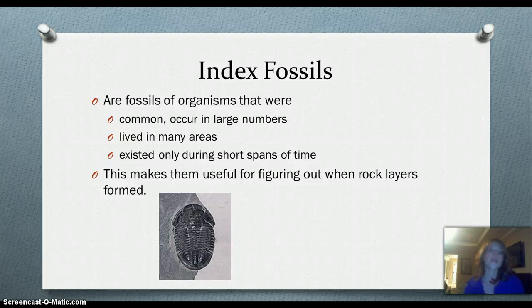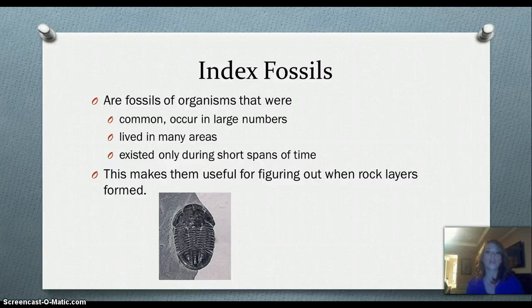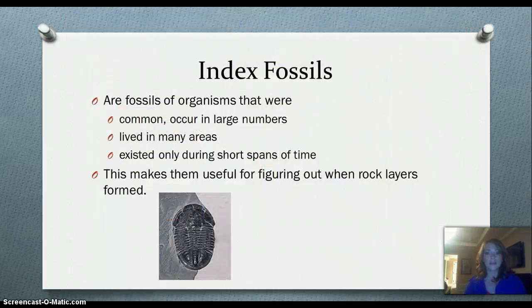Our last term we're going to cover today is index fossils. Index fossils are fossils of things that lived in mass numbers — there were lots of them, they lived in lots of different areas, and they existed for geologically fairly short periods of time. Because there were so many of them and they appear prevalently in the fossil record, and because we know the time periods they lived in, they are useful in figuring out the age of the rock layers they are found in and around. We'll be talking about index fossils more and looking at examples in our next lessons. That's where we're going to end for today. Thanks for listening, guys!